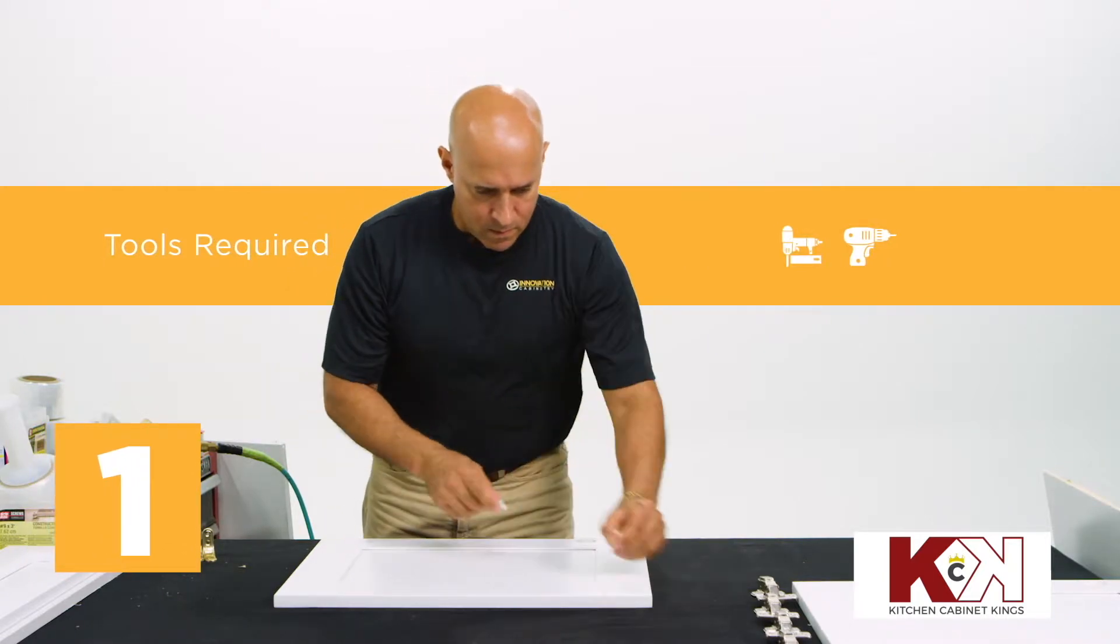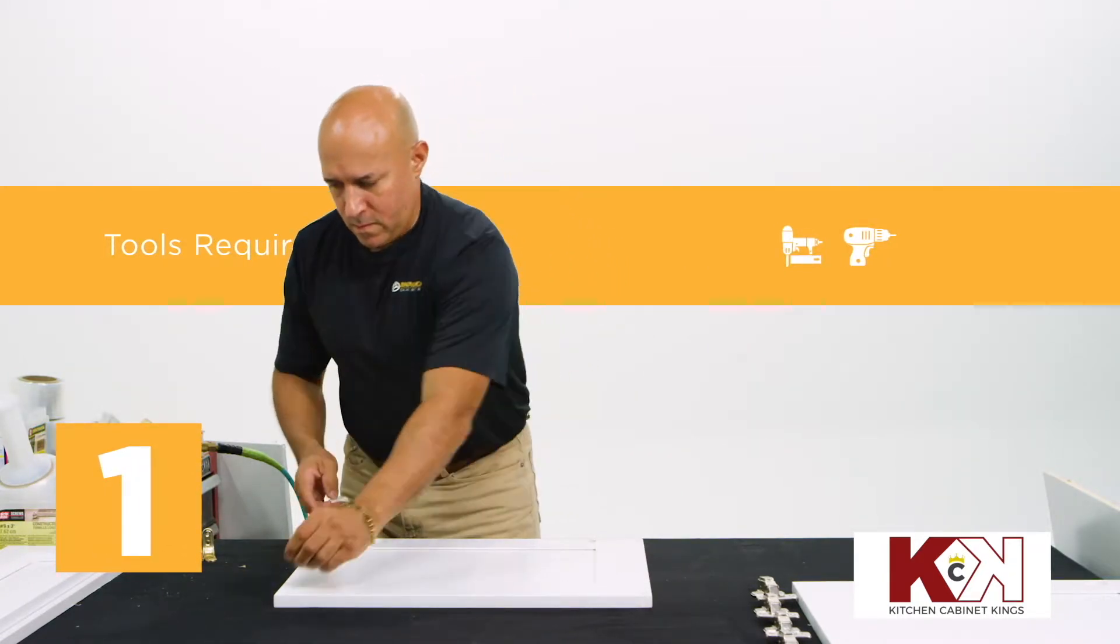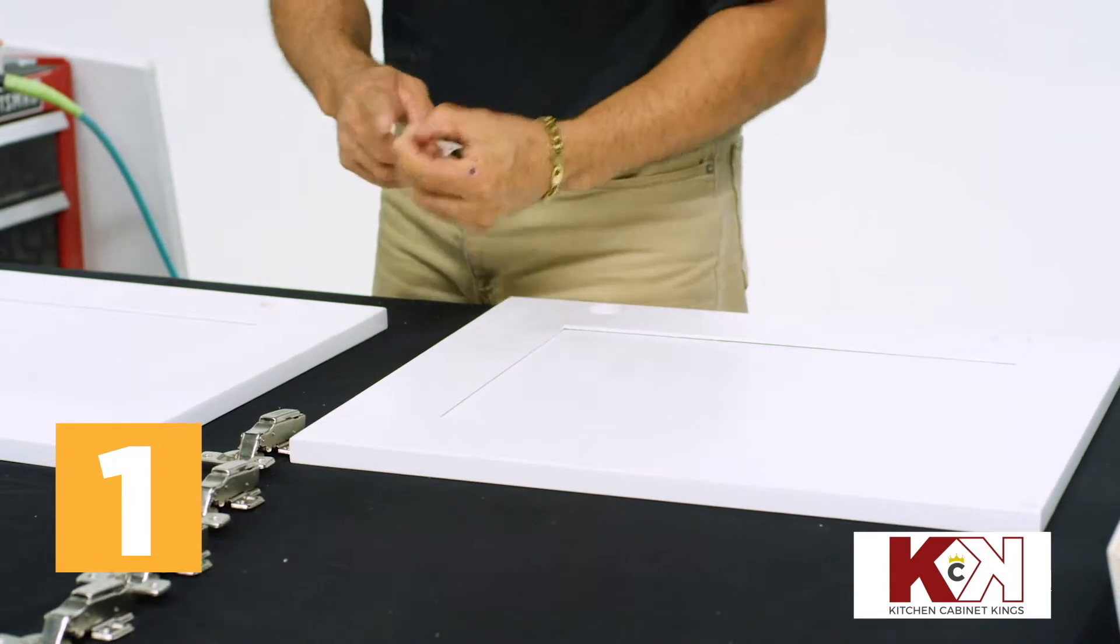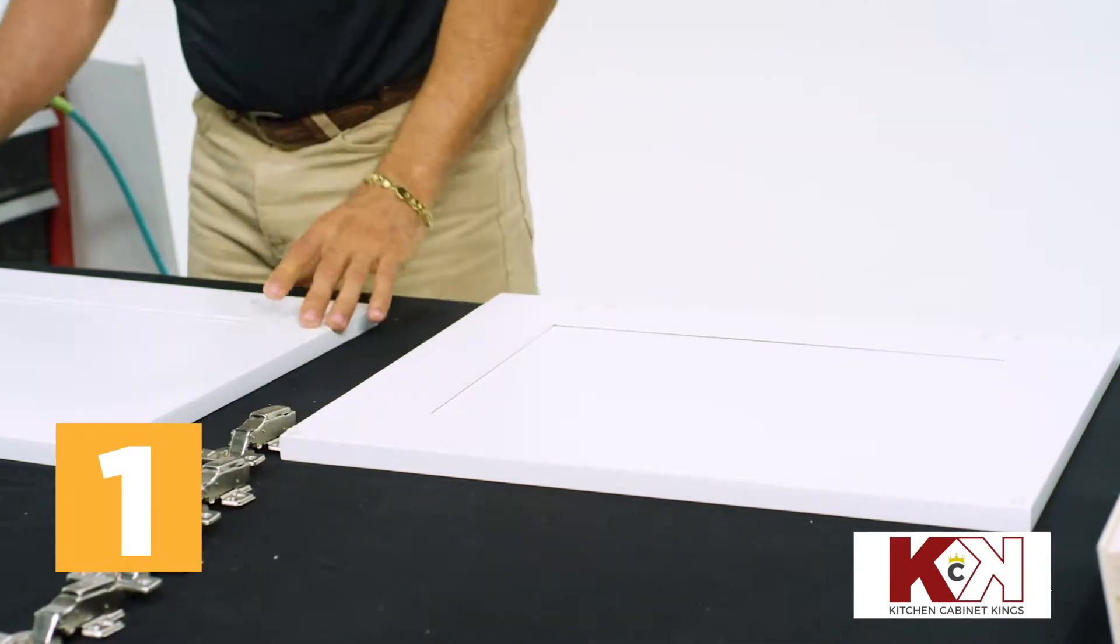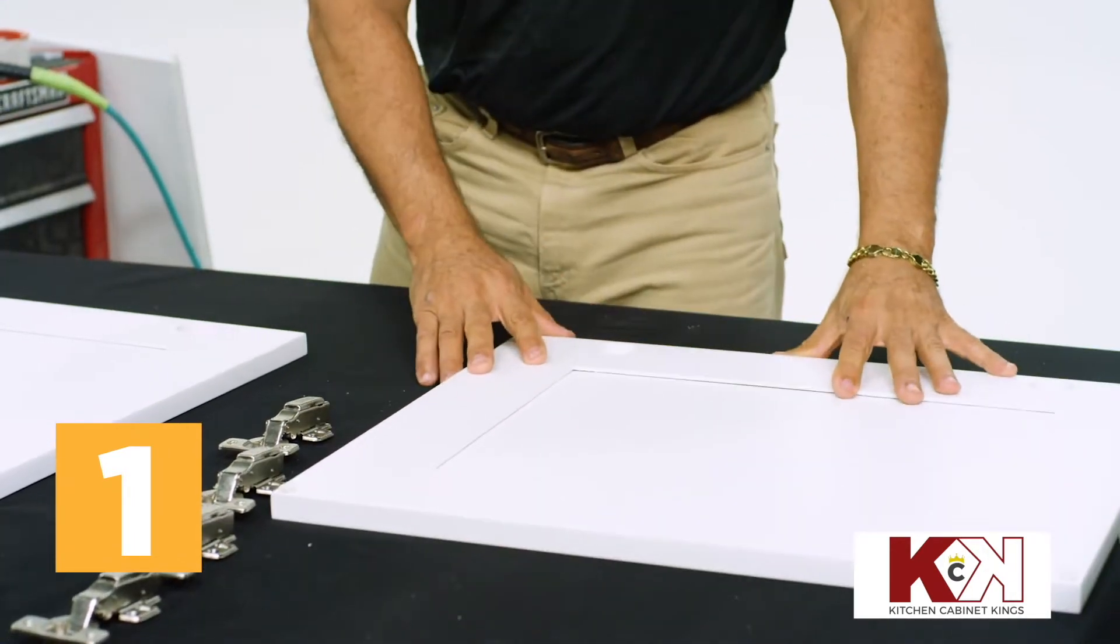Begin with both doors face down on your workstation, the sides with the hinge holes closest to you, and place an adhesive corner pad on each door's outside corners.